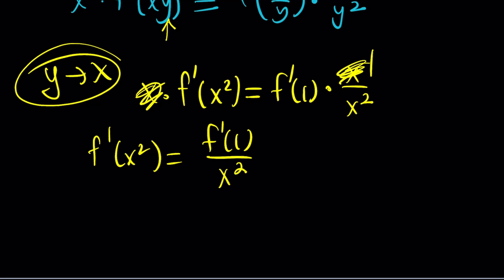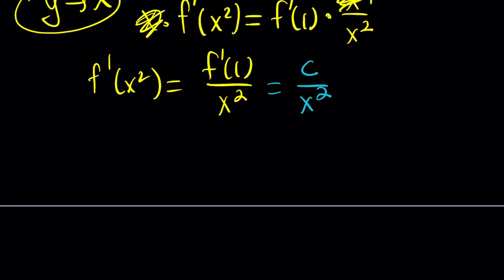And now f'(1) is a constant because you differentiate f and then replace x with 1, which gives you a constant. Let's replace it with c. So our function, the derivative becomes c/x². But wait a minute. This is x². Now, there's an easier way to do it, and that's called substitution. So let's rewrite this so you can see better what I'm talking about. This is my equation. And can I replace x² with something like t?